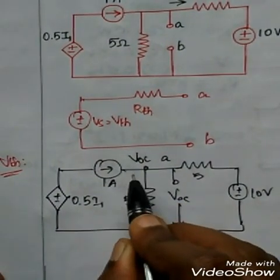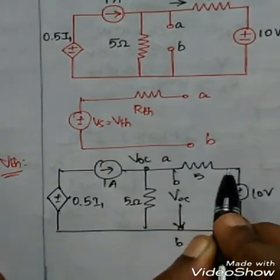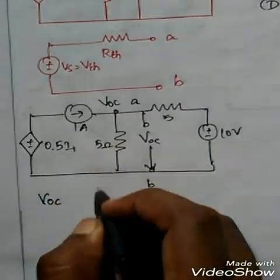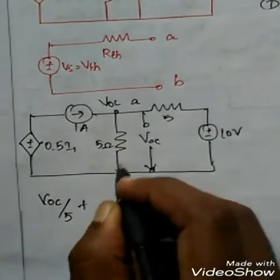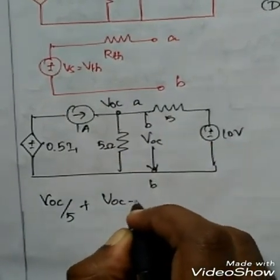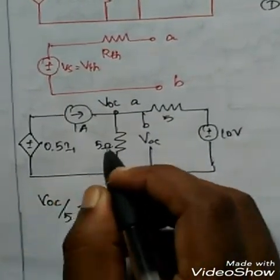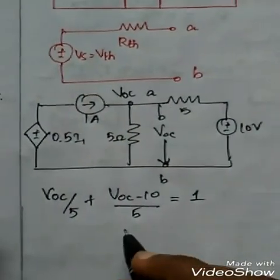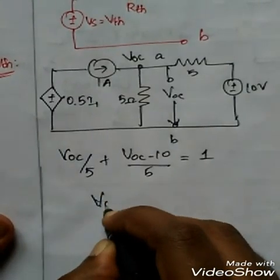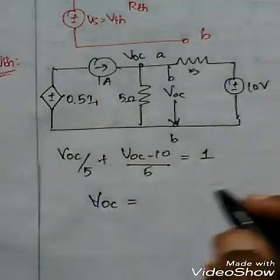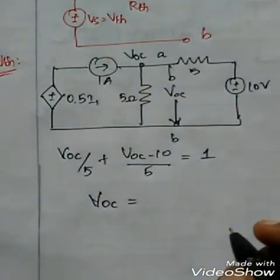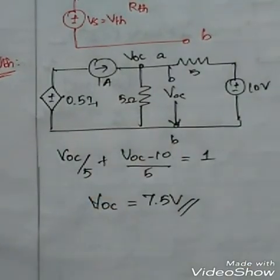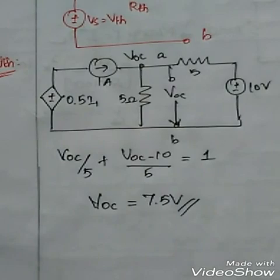At this node, there is one incoming current of 1 ampere and two outgoing currents. Applying KCL: VOC minus 0 divided by 5, plus VOC minus 10 divided by 5, equals 1 ampere — that is the only incoming current. This is the final equation. On solving this equation, VOC value will be equal to 15 by 2, that is 7.5 volts. Solve by yourself and you will get the value of 7.5 volts.